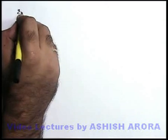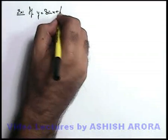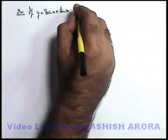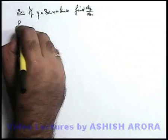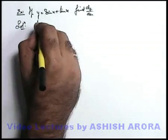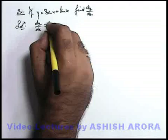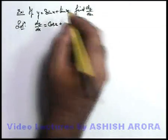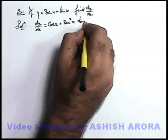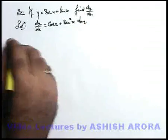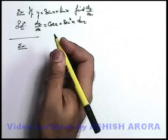Let's see one more example. If we are given with y = sin x + tan x and we are required to find dy/dx. Here the value of dy/dx can again be given by direct formulas. For sin x the direct differentiation is cos x. Plus for tan x, the direct differentiation is sec squared x. This is the answer. It's quite simple — if you are able to just recall what direct formulas you have studied, you can directly apply them.